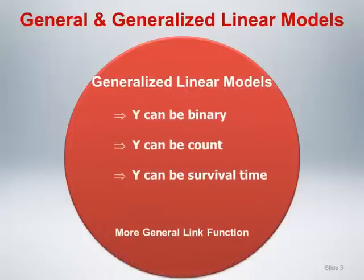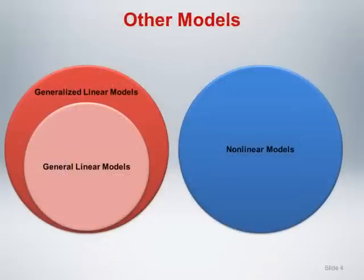This larger class of models can accommodate responses that are binary, counts, or survival times, and allows for a more general link function, such as the logit link discussed for logistic regression. There are also nonlinear models where the relationship between the slope parameters and the response variable are modeled using nonlinear functions instead of the linear functions we have talked about up until now. We will not discuss nonlinear regression beyond mentioning it here.